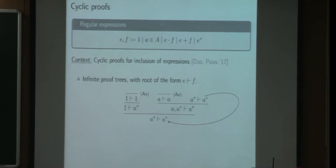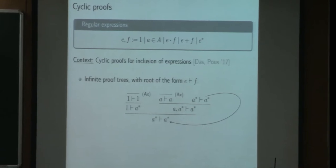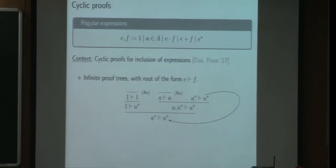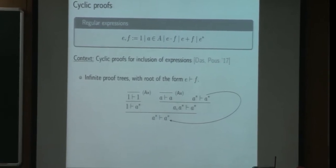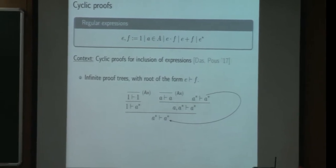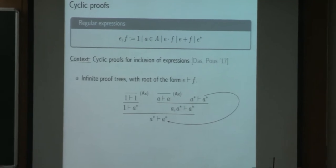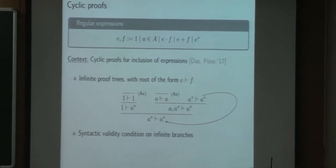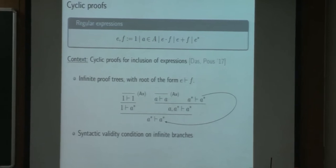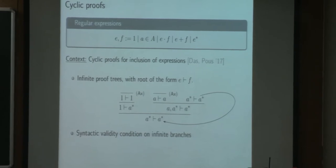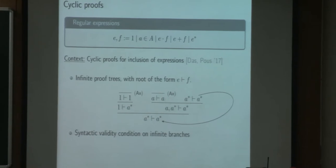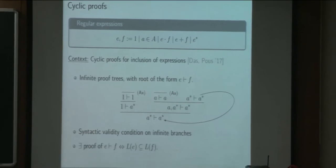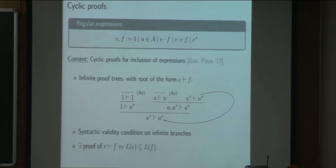We depart from a work from Damien Pouz and Anupam Das about a cyclic proof system which describes the inclusion of regular expressions. The fact that we allow for infinite branches and to reuse some part of the proof tree makes that not every proof is valid. And so we need to have a validity criterion on the infinite branches to say that a proof is valid. And this criterion is syntactic, so it's easy to check. And we end up with a proof system that is sound and complete for the inclusion of regular expressions.